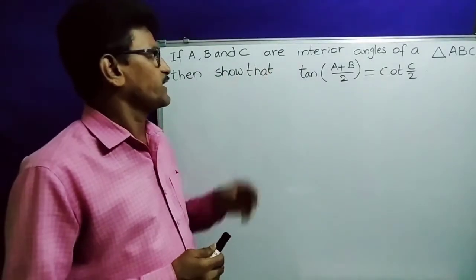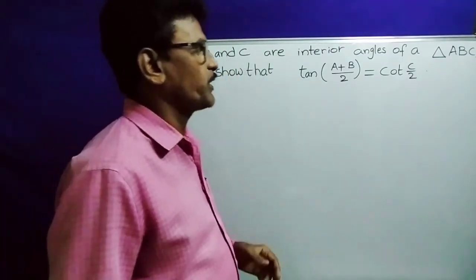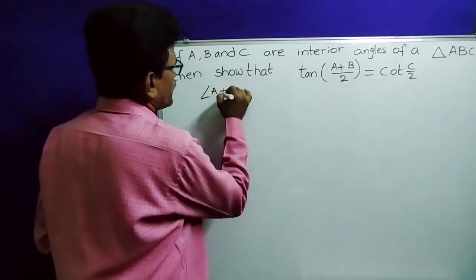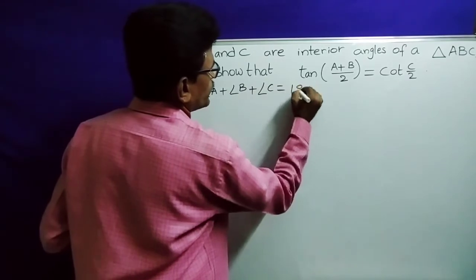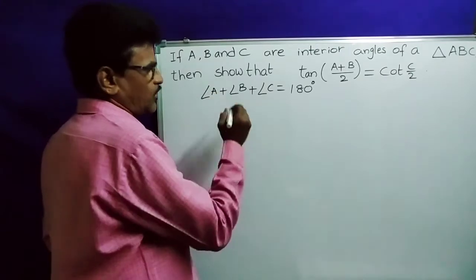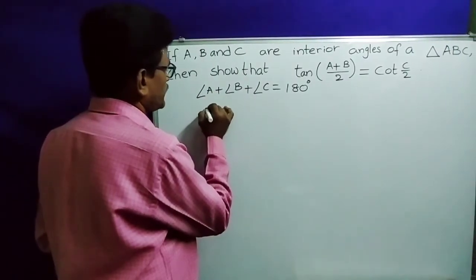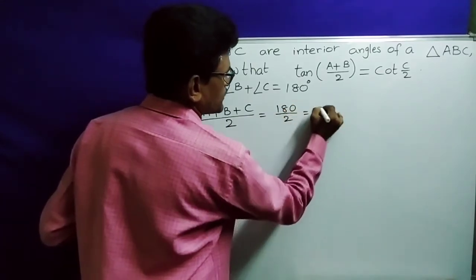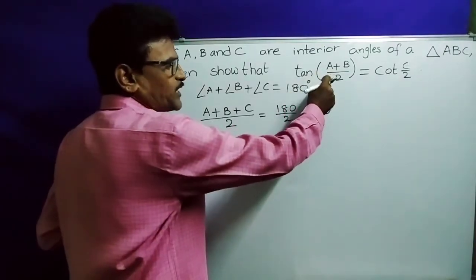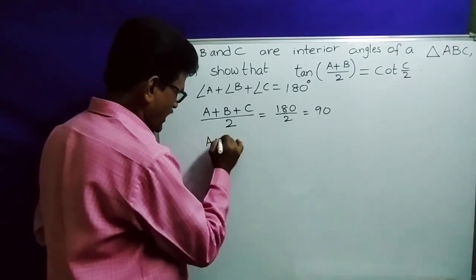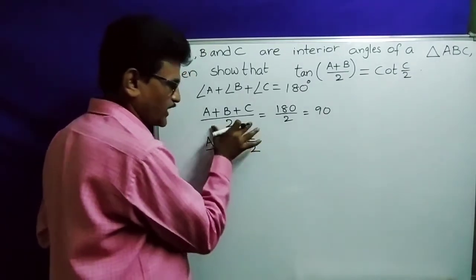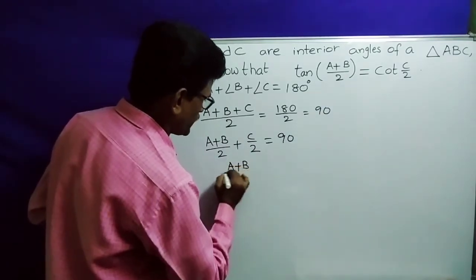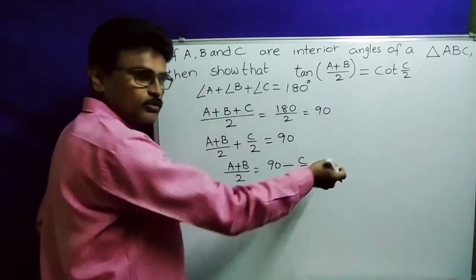Next important problem: if A, B, C are interior angles of a triangle, show that tan of (A plus B) by 2 equals cot C by 2. We know that in a triangle, angle A plus angle B plus angle C equals 180 degrees. Dividing both sides by 2: (A plus B plus C) by 2 equals 90. Separating C by 2, we get (A plus B) by 2 plus C by 2 equals 90.